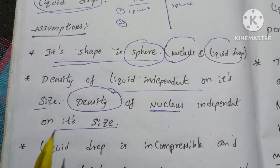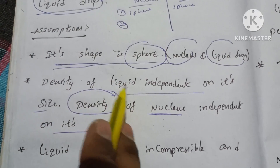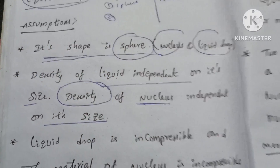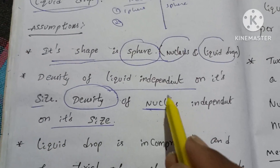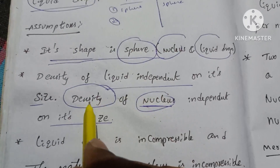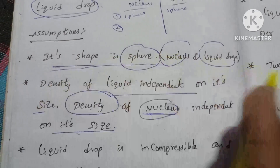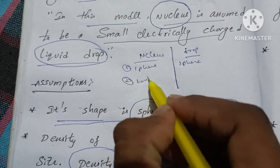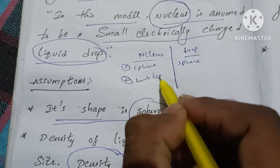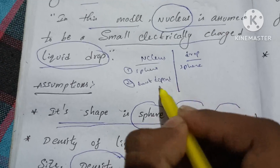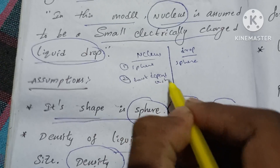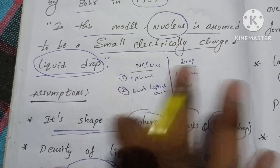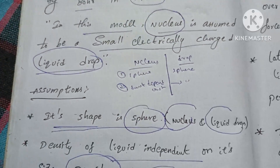The first point: the liquid density does not depend on the size of the liquid. Similarly, the nuclear density does not depend on the size of the nucleus. This is the same — a similar property on both sides.